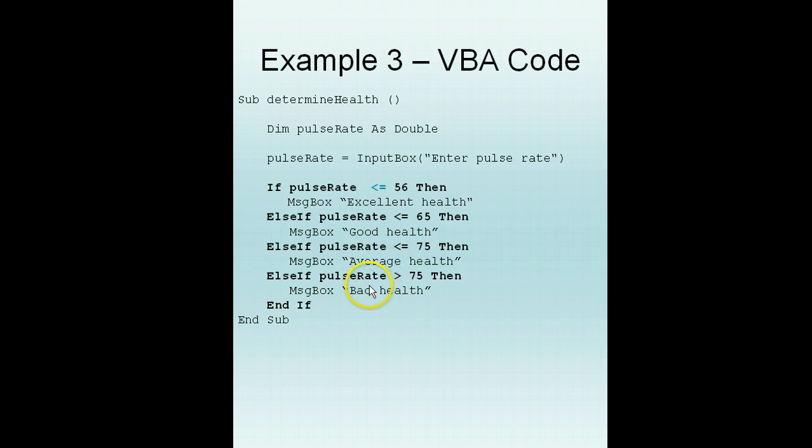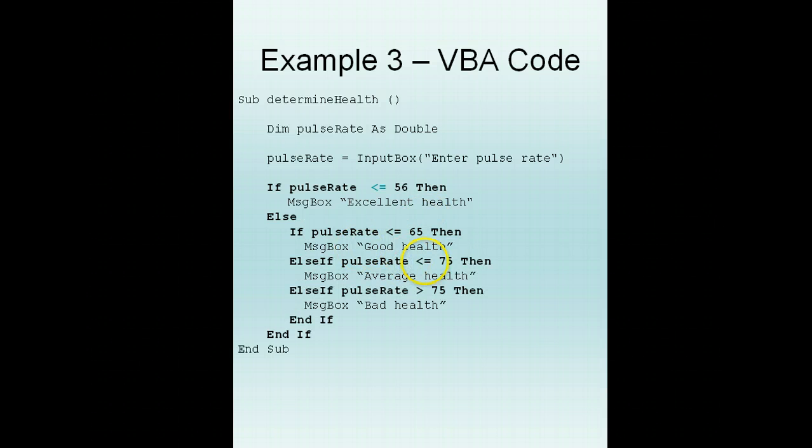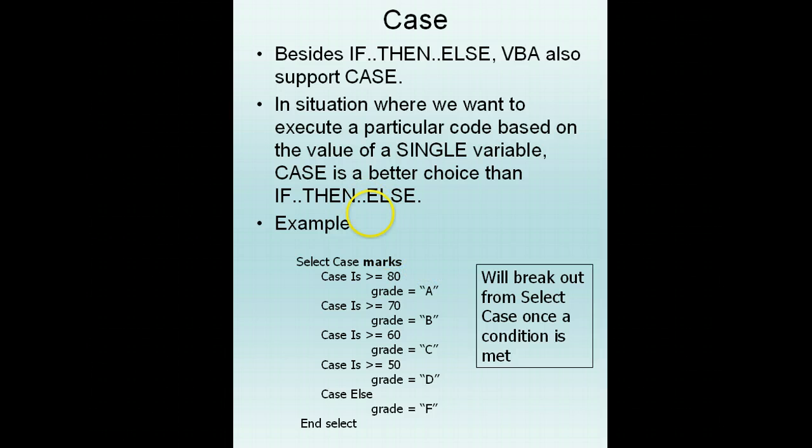If it's more than 75 then bad health. Now another way of doing all this, especially when we have multiple conditions - in this case where we have a condition for excellent health, condition for good health, condition for average health, condition for bad health - is using the select case statement.